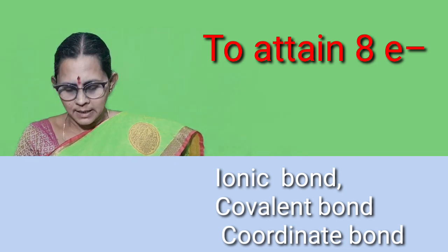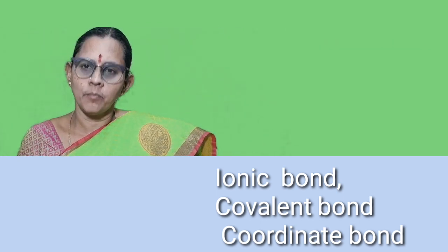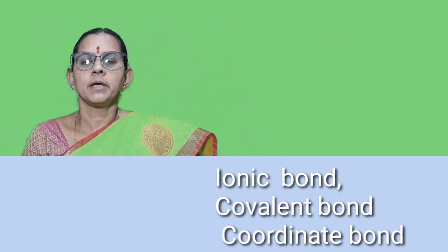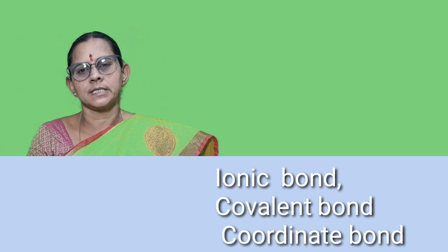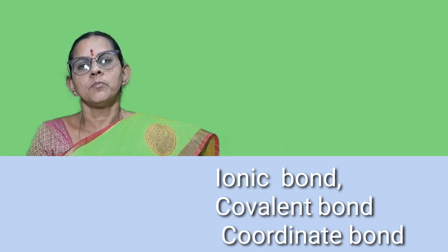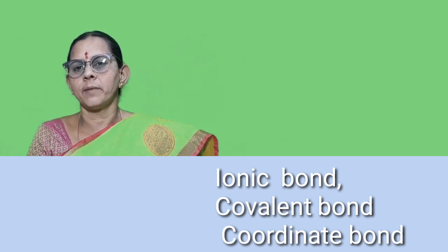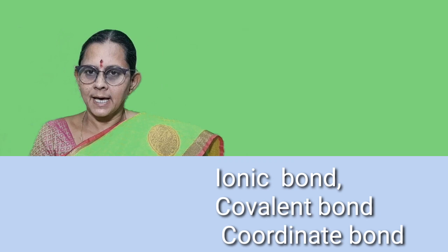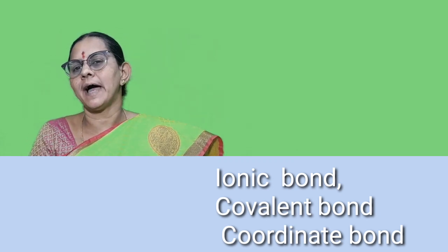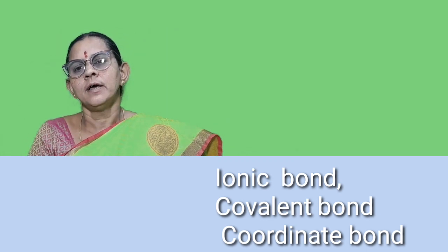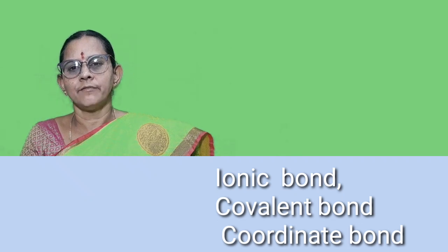There are different types of chemical bonds — strong bonds and weak bonds. Strong bonds include ionic bond, covalent bond, coordinate bond, and metallic bond. Weak bonds include hydrogen bonds and Van der Waals forces. In this lesson, you are going to learn about ionic bond, covalent bond, and coordinate covalent bond.